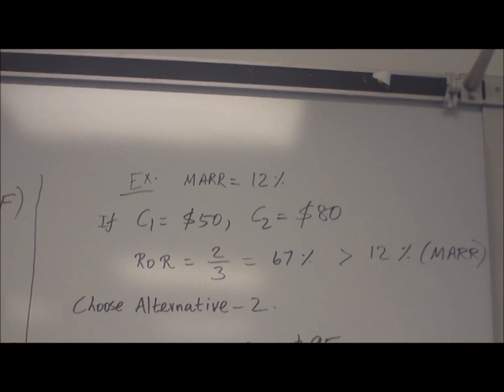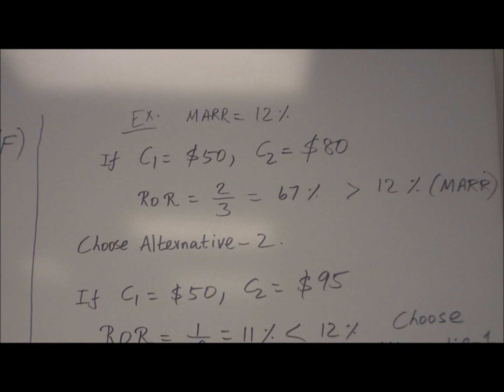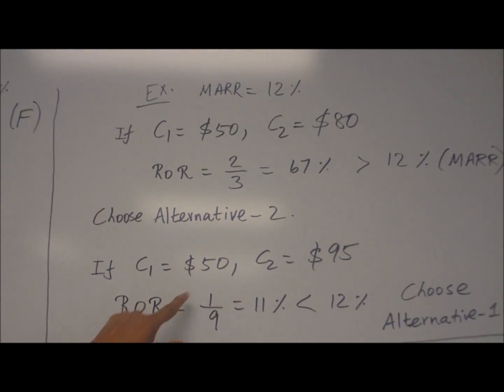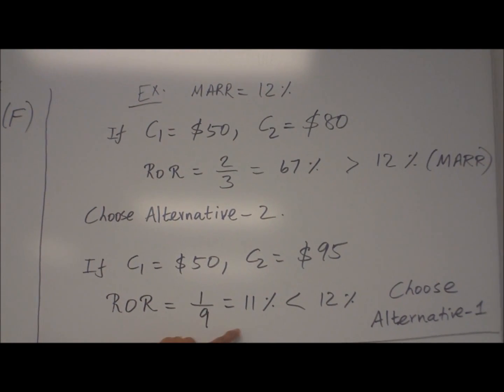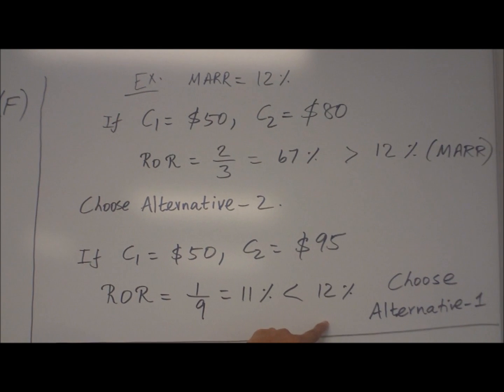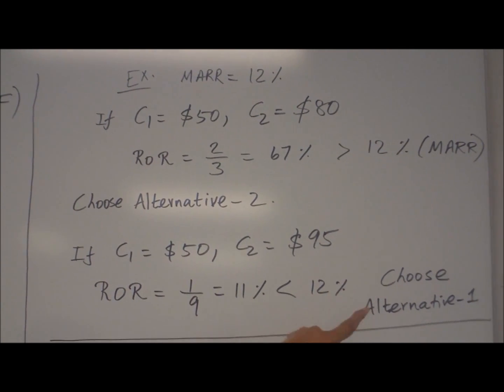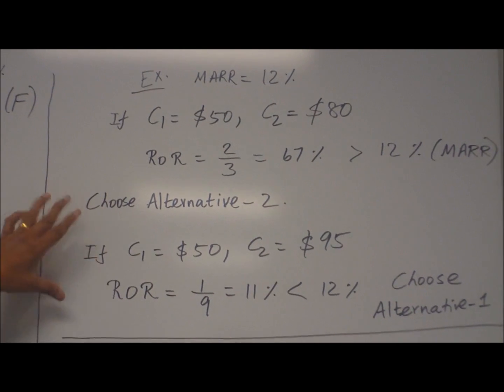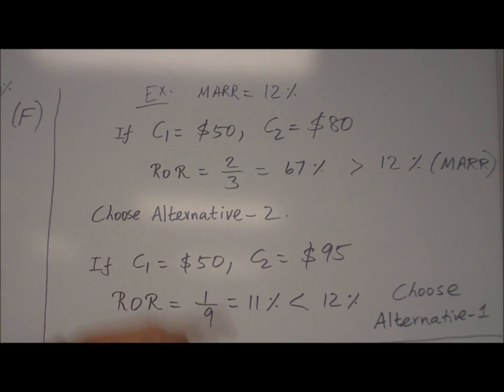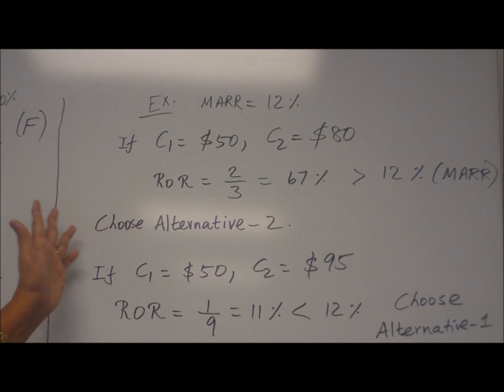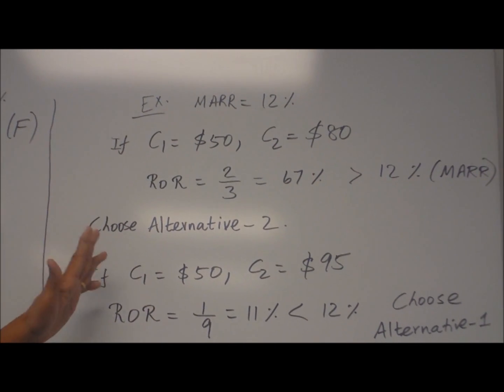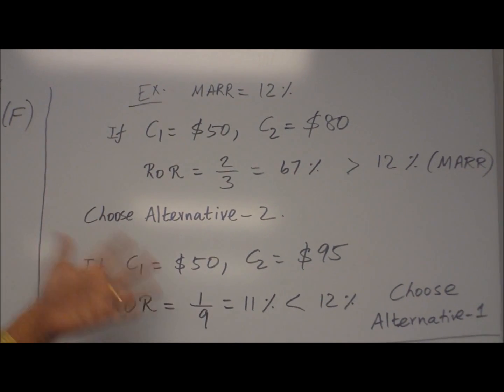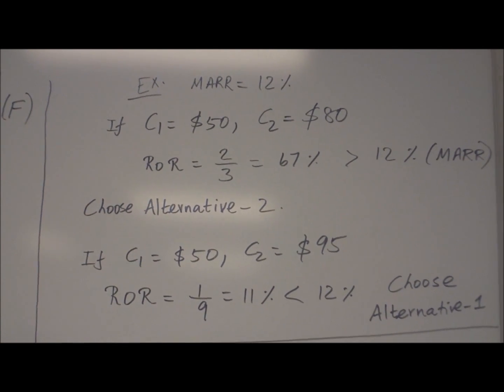If C1 equals 50, C2 equals 95, then you can calculate ROR 1/9, which is 11%, so less than 12%, so choose alternative 1. We made this assumption C2 greater than C1. Suppose C1 greater than C2, simply change it. The higher value is C2, lower value is C1. Then it will work out the same way. Just switch them.